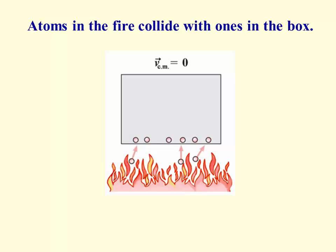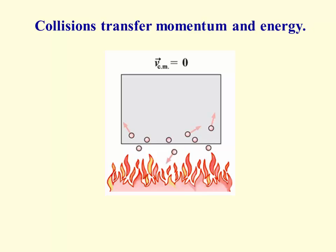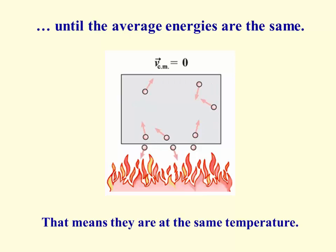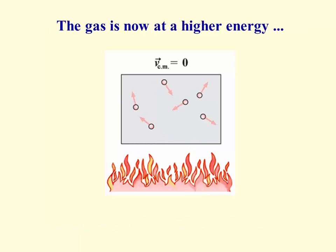It's also got a microscopic picture, just like we would have of a gas, because it is, after all, a gas, a very hot gas. Atoms in the fire collide with the ones in the box. As those collisions take place, they transfer momentum and energy. This process continues until the average energies are the same. Remember, average energy is what we mean by temperature, so that means they're at the same temperature.